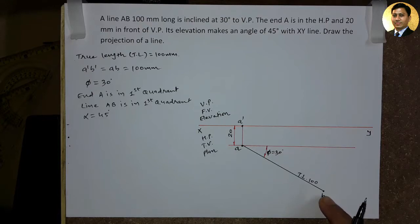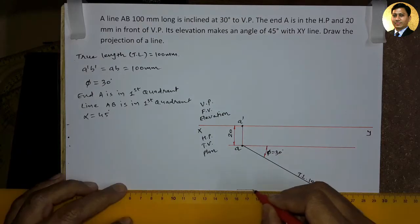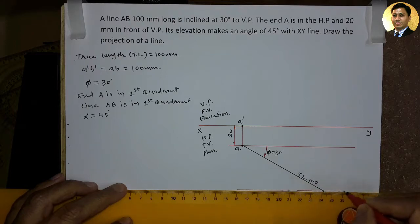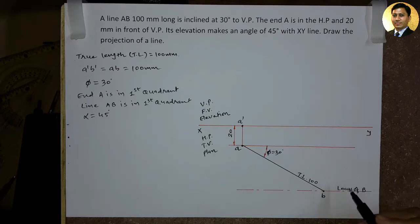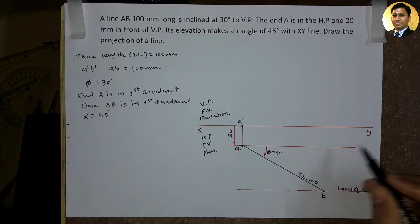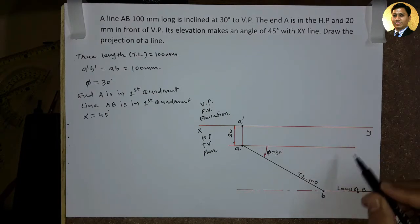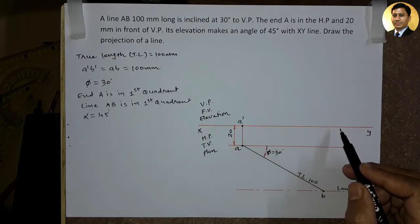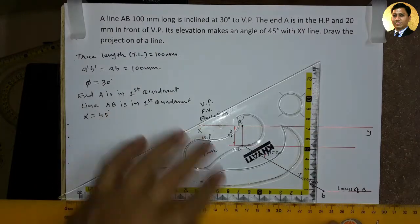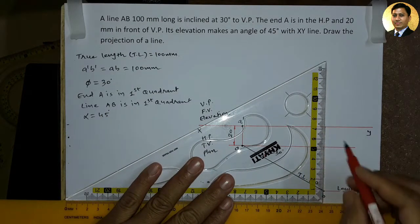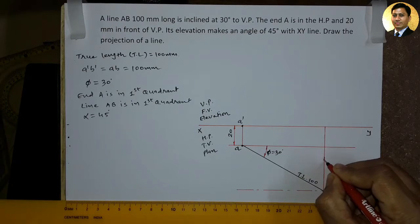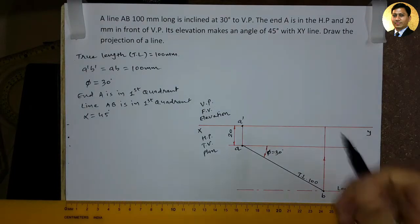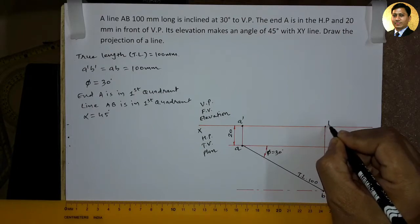अब हम point b में से pass होती हुई locus line draw करेंगे और इस locus line को हम बोलेंगे locus of b. अब हम इस problem को आगे draw करने के लिए point b में से उपर की दिशा में एक vertical line draw करेंगे. और इस vertical line को हम point a' में से pass होती हुई original line के साथ intersect करवाएंगे. यह line हमने नीचे से उपर की दिशा में draw की है और यह line a' की horizontal line के साथ जहाँ मिलेगी वहाँ हम नाम देंगे b1'.